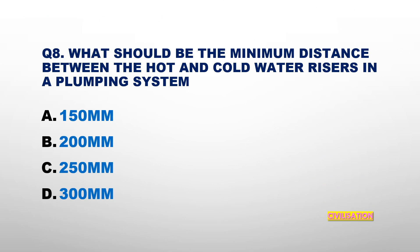Question number 8: What should be the minimum distance between the hot and cold water risers in a plumbing system? Options: 150 mm, 200 mm, 250 mm, or 300 mm? The answer is 150 mm.